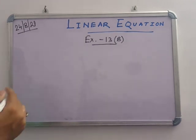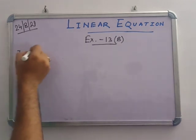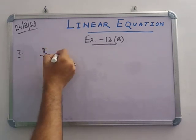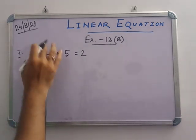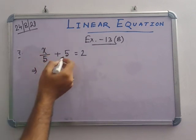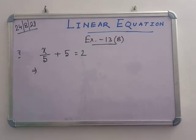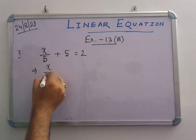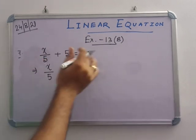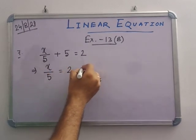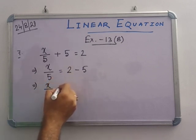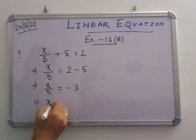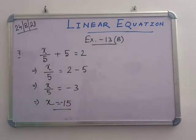In the next problem, number 7: x/5 + 5 = 2. This is a very important and tricky problem — this type comes in exams. When a division part is present, keep the division part and calculate the other part first. So x/5 = 2 - 5 = -3, meaning x = -15.